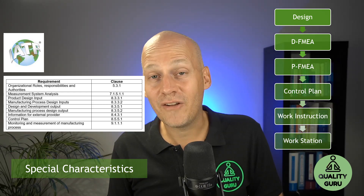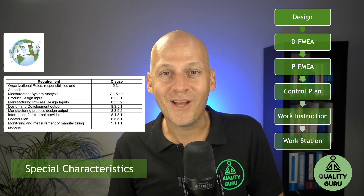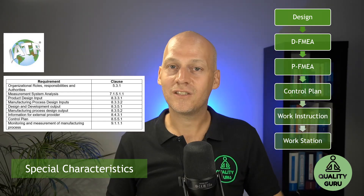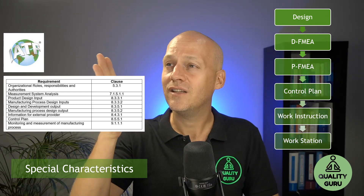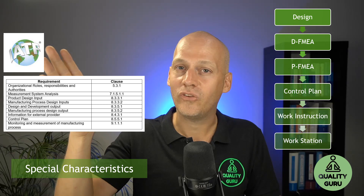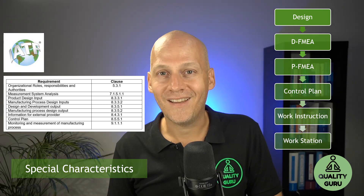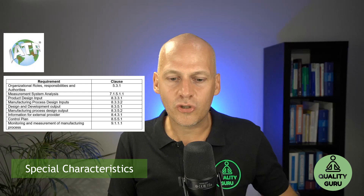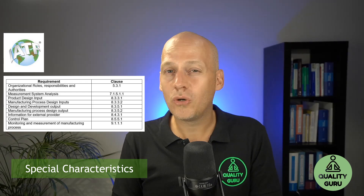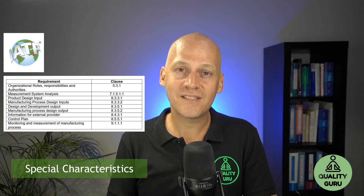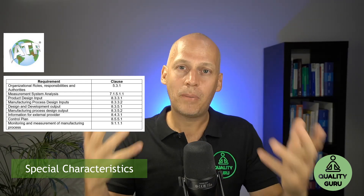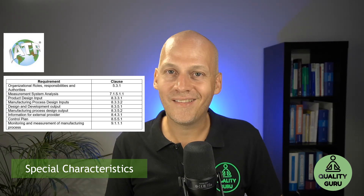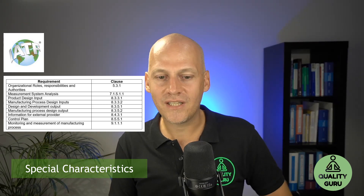Also on the manufacturing shop floor, people can see immediately: 'This station is important, something is happening here — there is the SC or CC logo, we need to pay attention.' Last but not least, you should also forward it to your suppliers if necessary — if parts coming from your suppliers are influencing the special characteristics. You should have a strategy in place to monitor and control.